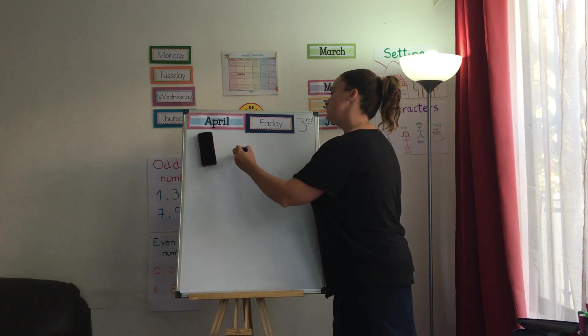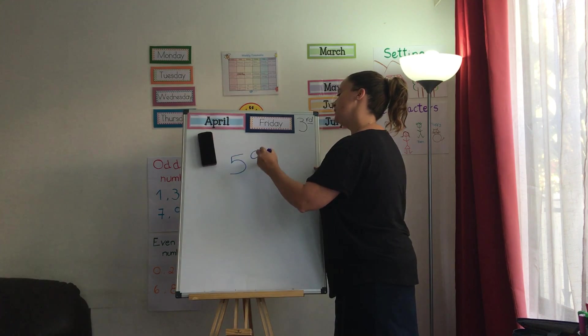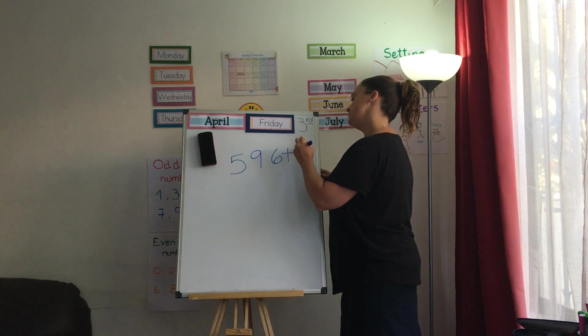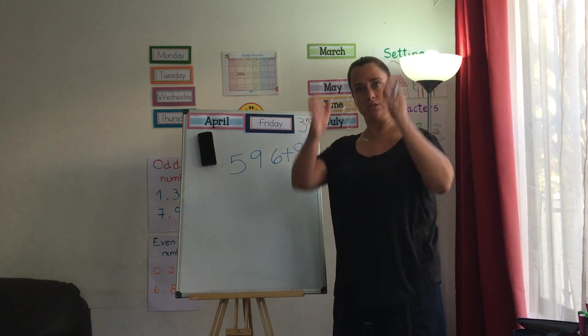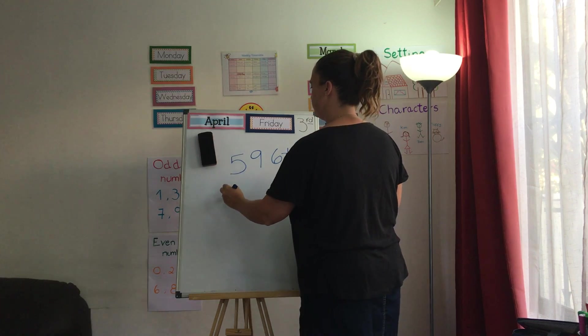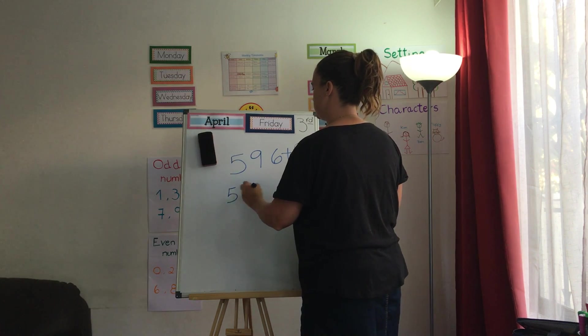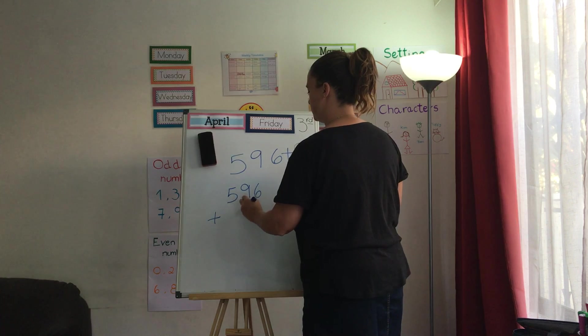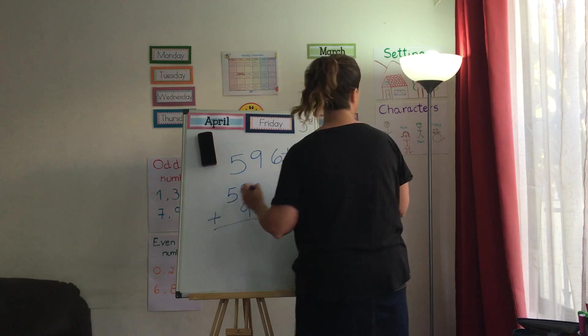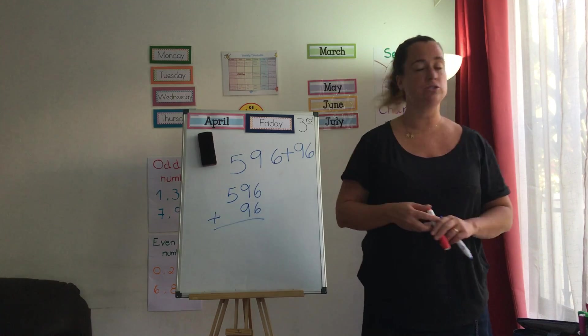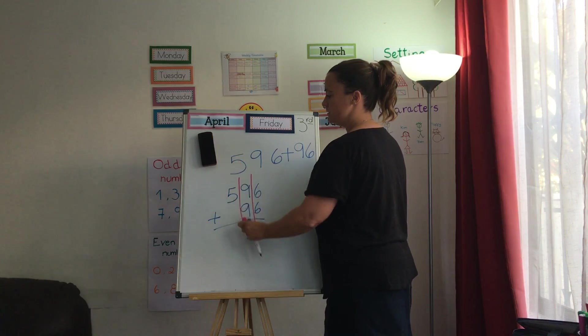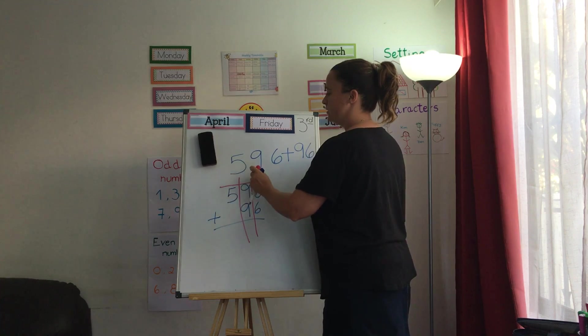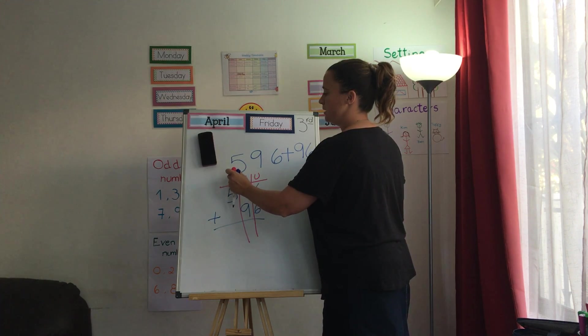Let's go to 596 plus 96. What about this one? First thing? Go vertical. 596 plus 96. Let's do our chart. 1s, 10s and 100s. 1s, 10s and 100s.